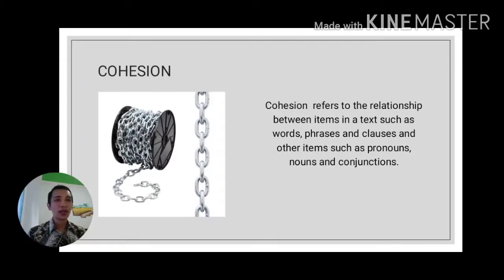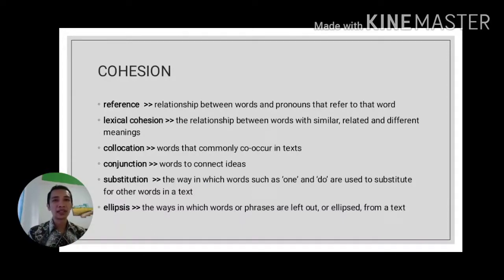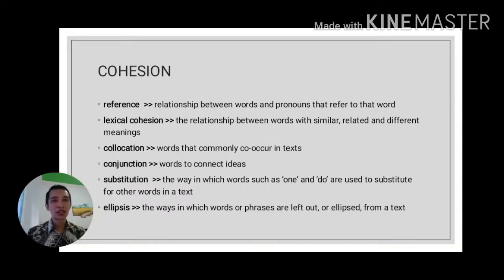Other items such as pronouns, nouns, and conjunctions also contribute. To make a text more understandable and readable, each element inside the discourse or text should be linked together to talk about something in a similar way. There are some characteristics you can use to identify that a text is cohesive, such as reference, lexical cohesions, collocations, conjunctions, substitutions, and ellipses.